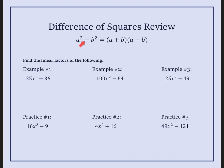A difference of squares means you have a subtraction sign, and it means you can take the square root of each of these terms. So if you can take the square root of a squared and you can take the square root of b squared, then it factors to one sum and one difference of the square roots.